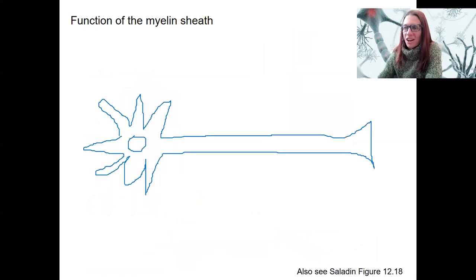Here's a multipolar neuron. We've got our dendrites with incoming signal, typically chemical.